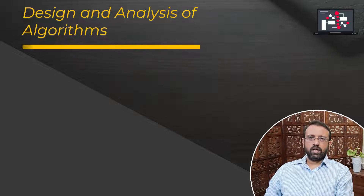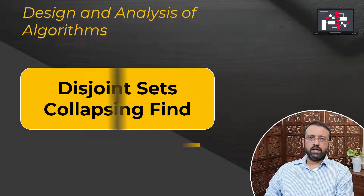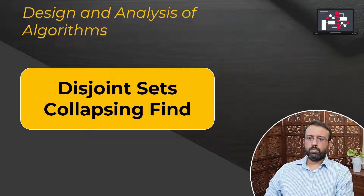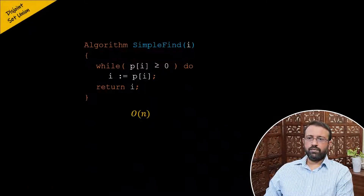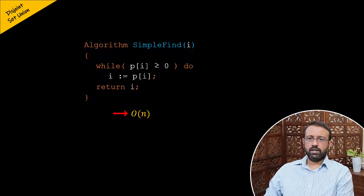Let us look at the collapsing rule that is applied to the find operation on disjoint sets to make the operation efficient. Though the simple find algorithm has a time complexity of O(n), which is a better time complexity, it does not perform well in certain cases.